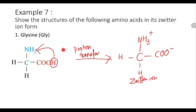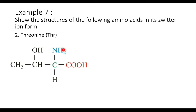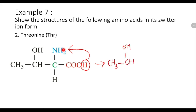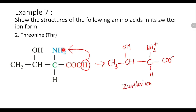For threonine, the same proton transfer occurs: the H⁺ from the carboxyl group is donated to the amino group, which as a base accepts it. NH₂ accepts one H⁺ and becomes NH₃⁺, and the COOH donates that H⁺ and becomes COO⁻. The rest of the amino acid structure remains unchanged. This is the zwitterion for threonine.